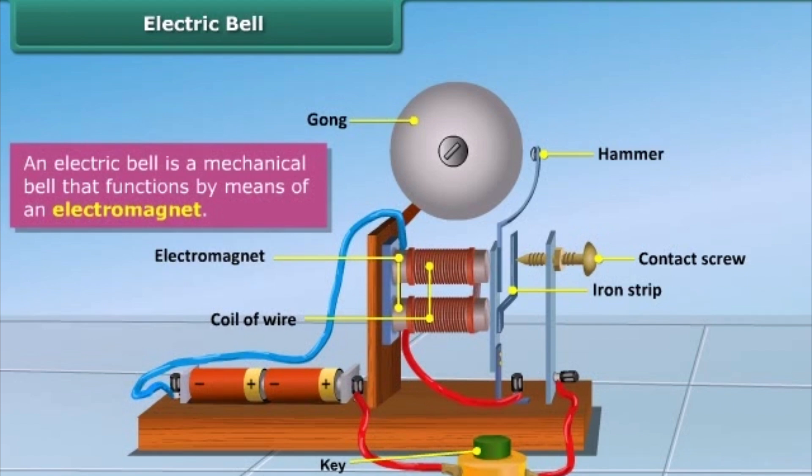There is a contact screw near the iron strip. When the iron strip is in contact with the screw, the current flows through the coil turning it to an electromagnet. It then pulls the iron strip. In the process, the hammer at the end of the strip strikes the gong of the bell to produce sound.